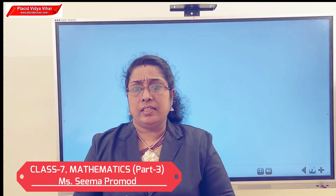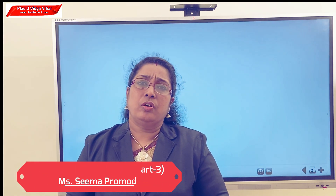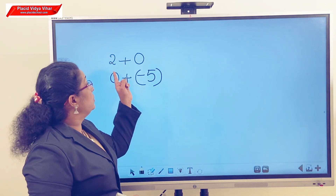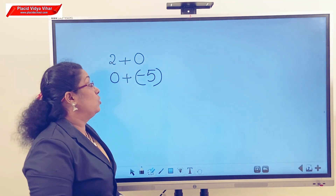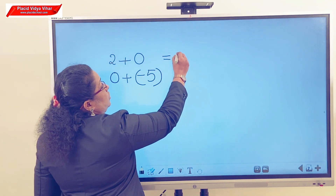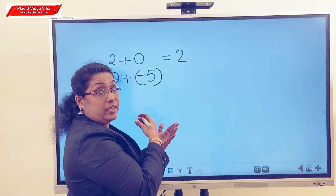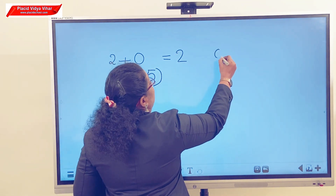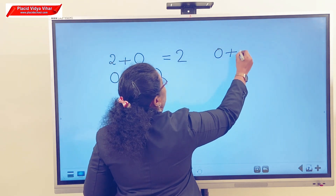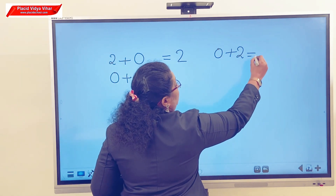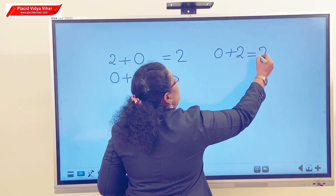We all know 0 is an integer. Now let us look at what happens if you do all mathematical operations with 0. First, let us add an integer with 0 and check what we will get. Look here: 2 plus 0, the answer is 2. The reverse order is 0 plus 2, that is also equal to 2.